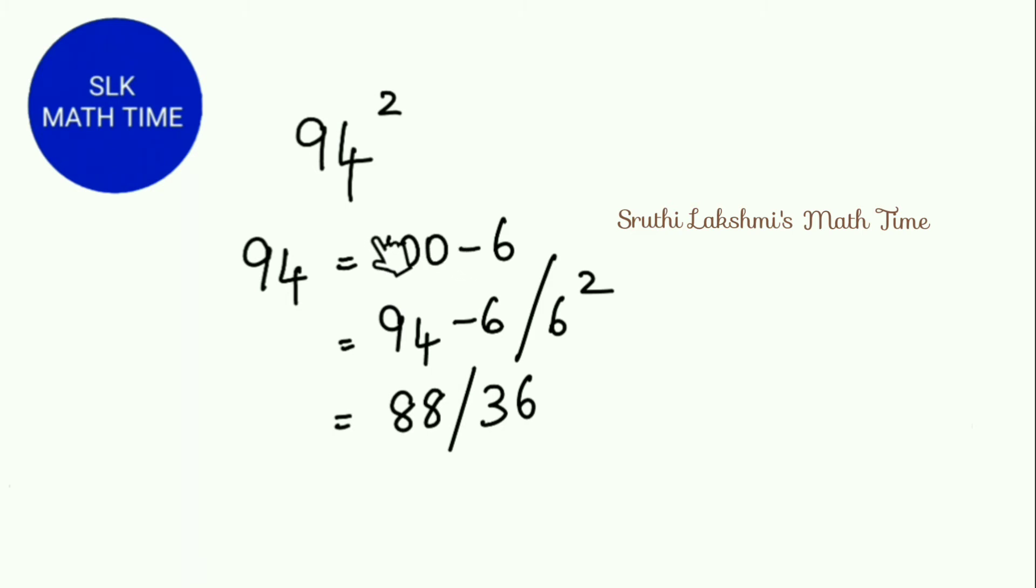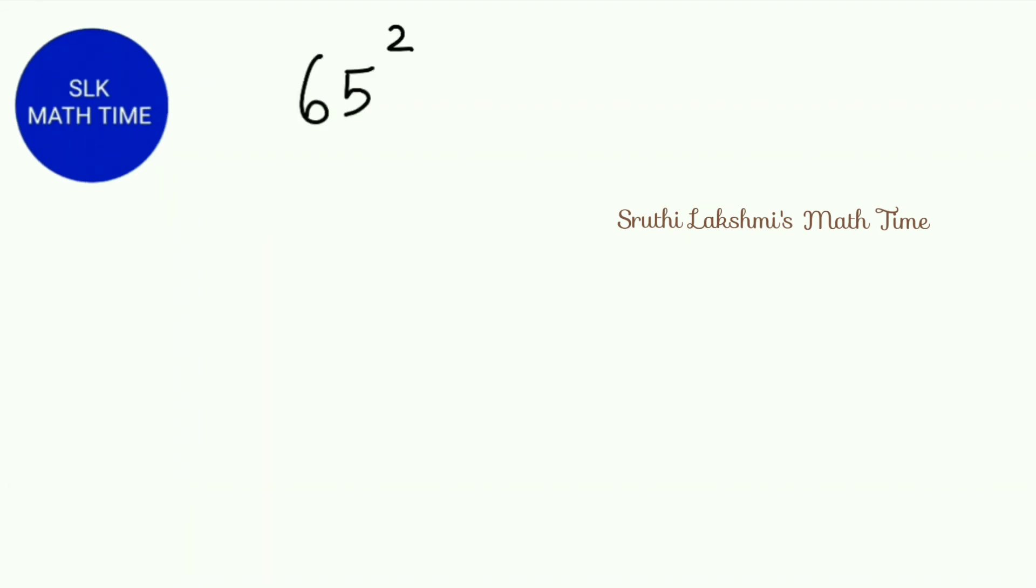Since we are squaring with the base 100, we don't need to add anything. So 94 square is 8836. See how easy this method is. Let's see another method.